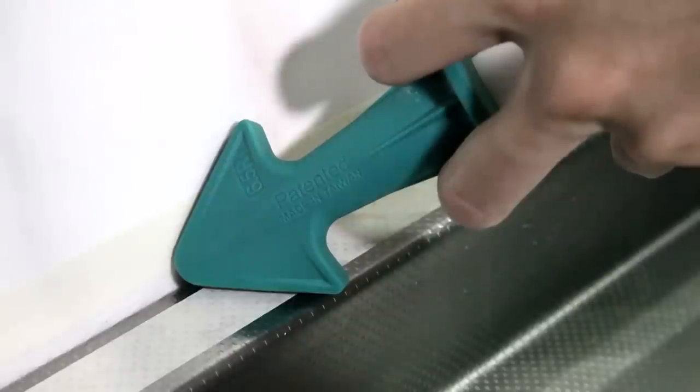Slightly tilt the nozzle to make the surface look good. Squeeze the caulking gun slowly and move it backwards.